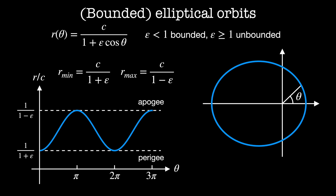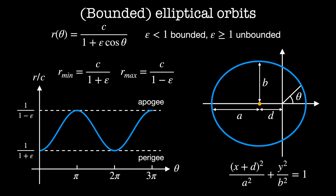The shape of the elliptical orbit can be defined implicitly. A is the semi-major axis (half the total length), B is the semi-minor axis (half the total width), and D is the distance from the center of the ellipse to the origin. The implicit equation for the ellipse is (x + d)² / a² + y² / b² = 1.